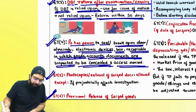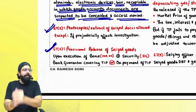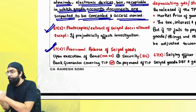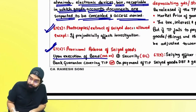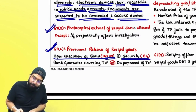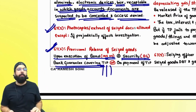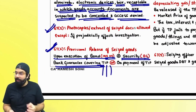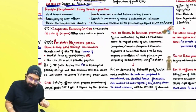Section 67(6) talks about provisional release of seized goods upon execution of a bond in GST INS 01 plus a security which is a bank guarantee. The bank guarantee should cover tax, interest, and penalties. If you do not want to give a bond and bank guarantee, then make payment of the tax, interest, and penalty, and the goods will be released.